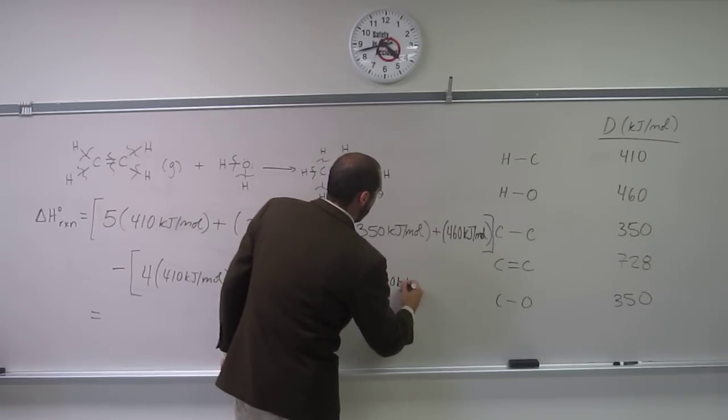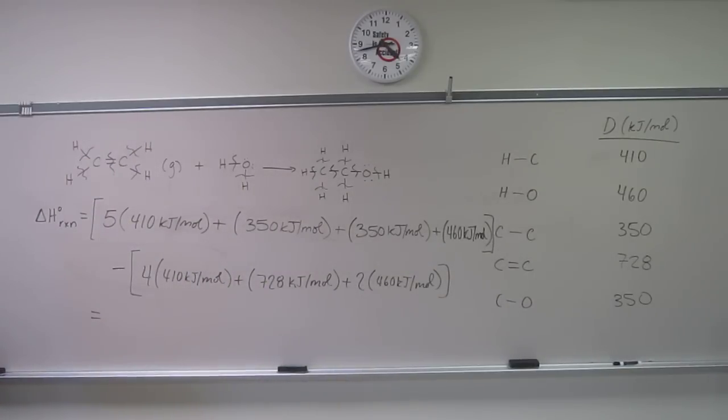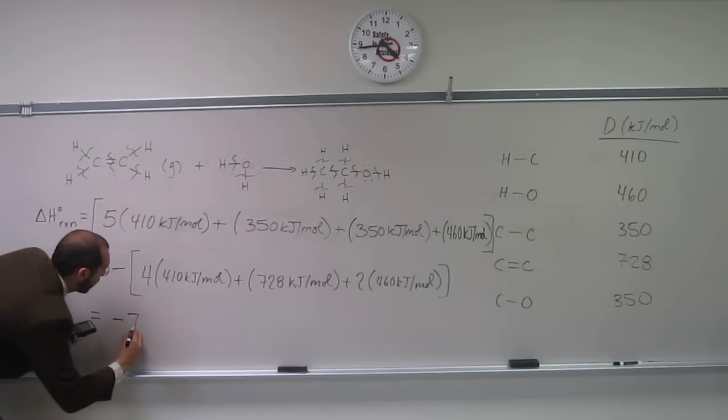Let's go ahead. So five times 410 plus 350 plus 460 minus 4 times 410 plus 728 plus 2 times 460. And if I did this right, I get a number of negative 78.